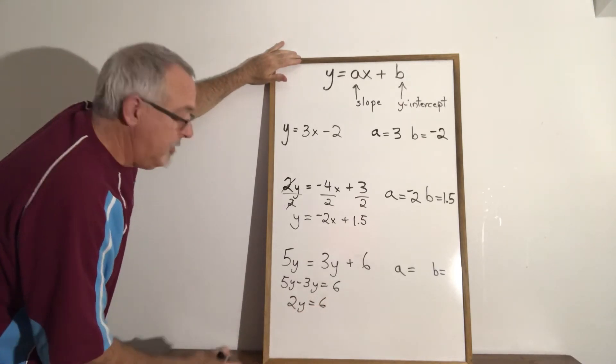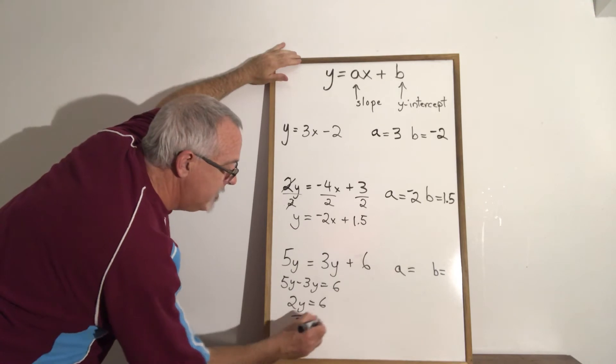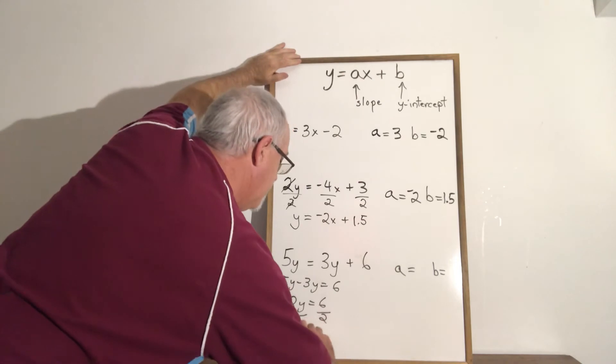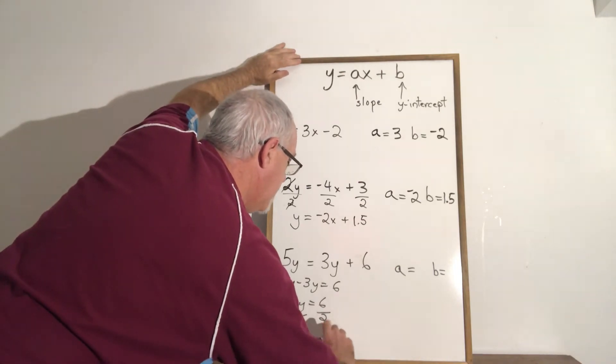I still have to isolate my y. I have to divide both of the terms in this equation by two. These cancel. Y is isolated and it's equal to three.